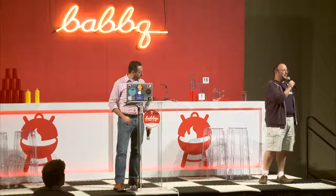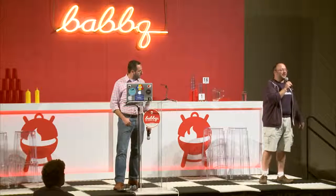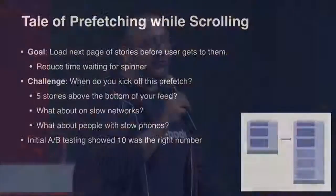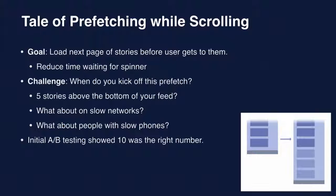The system allows us to optimize for competing variables. Quite often for these configurations you're not just thinking about one variable. A great example is data usage — you use data to improve performance, so users spend more time with the app than looking at a spinner. But data usage itself is one of the parameters you don't want to drive too high. The story here is how we did prefetching while scrolling through the news feed. We prefetch stories ahead of time so you don't hit that moment where you're looking at a spinner while we're getting the next set of stories. Originally we just said 10 stories ahead seemed fantastic — prefetch when you're 10 stories from the end.